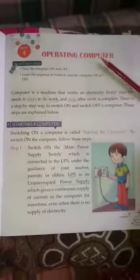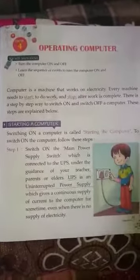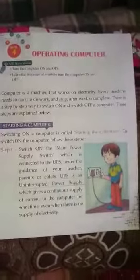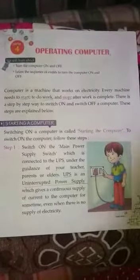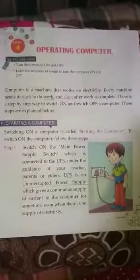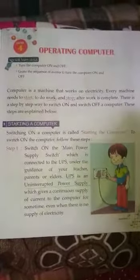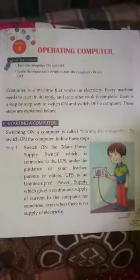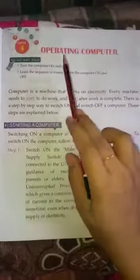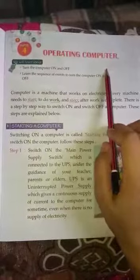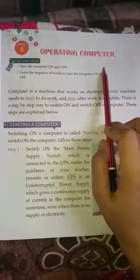Computer کا ایک ایسا system ہے جس میں ہم computer کو کس طریقے سے on کرنا ہے اور off کرنا ہے، اس system کے بارے میں step by step سمجھیں گے۔ on اور off تو وہی ہے operating computer system کا meaning — ہم اس کو operating computer system کہتے ہیں۔